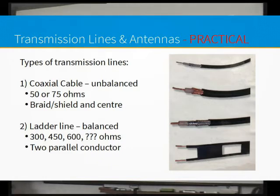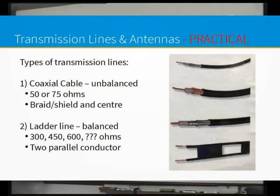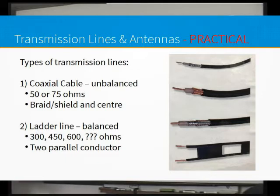The other type of transmission line is what we call ladder line - that's the old television ladder line. This is slightly higher in impedance, up around 300 or 450 ohms, and it has two parallel conductors. We call ladder line a balanced transmission line. The way I remember it: if an RF signal cuts through ladder line, it cuts through exactly the same signal on both lines, so it's balanced.